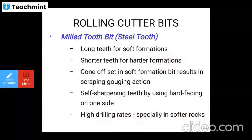The milled tooth bit uses long teeth for soft formations and shorter teeth for harder formations. Cone offset in soft formations results in a scraping or gouging action. Self-sharpening teeth are achieved by using hard facing on one side, giving high drilling rates for softer rocks.